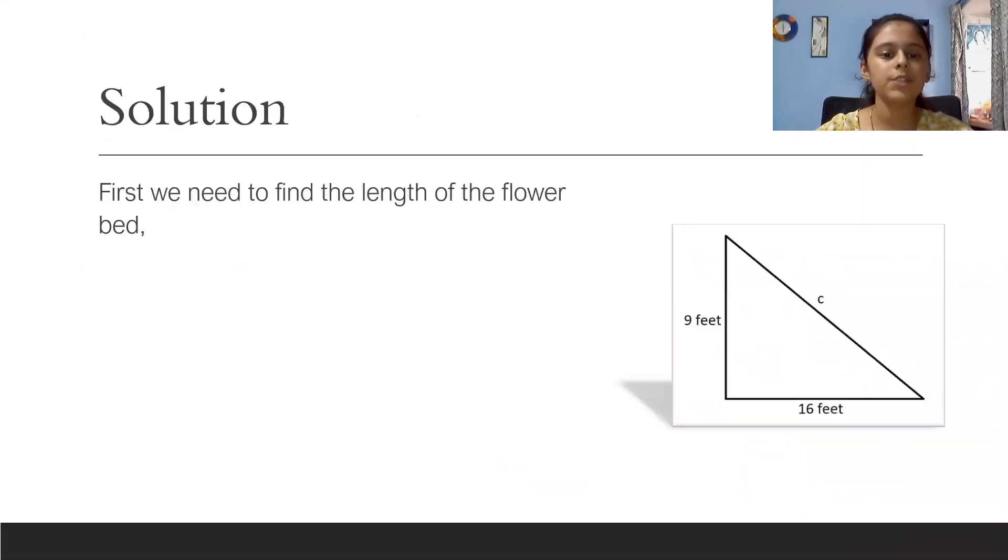Solution. First we need to find the length of the flower bed. One foot times four steps equals four feet. The length of the flower bed is four feet.